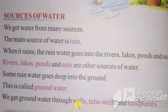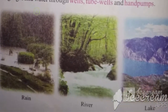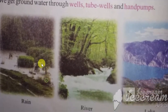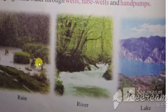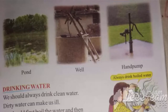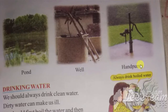Wells, tube wells, and hand pumps are how we access ground water. In the pictures: the first picture shows rain water, the second shows rivers and lakes. In another picture, there is a font, a coolie, a bell, and a hand pump.